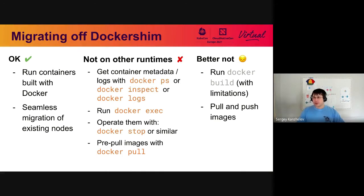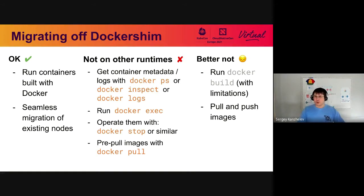You may be pre-pulling images with Docker pull following some instructions from the internet — that's all not going to work with the migration to other runtimes because Docker wouldn't know about these containers. We don't call into Docker to schedule the containers; we call into the runtime directly. Some things will still work if you install Docker, like Docker build. But there are other tools that don't require running in privileged ports, so you may not want to do that.